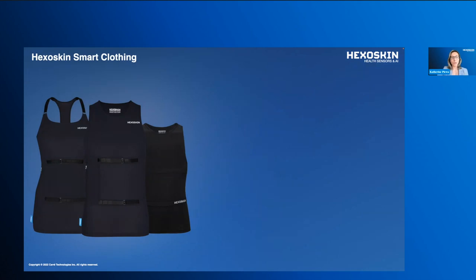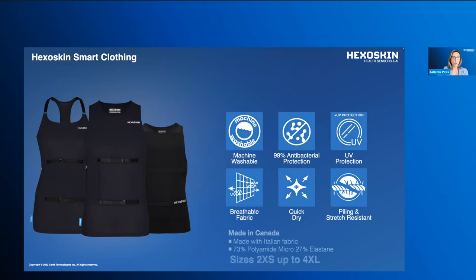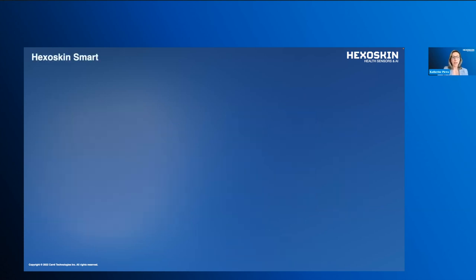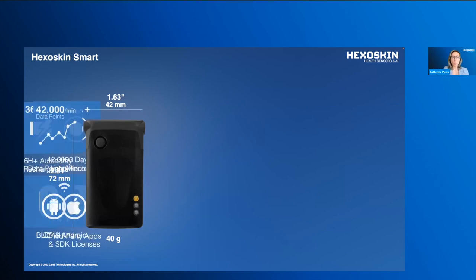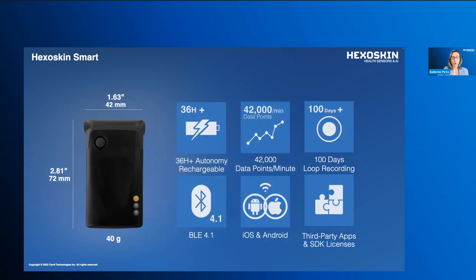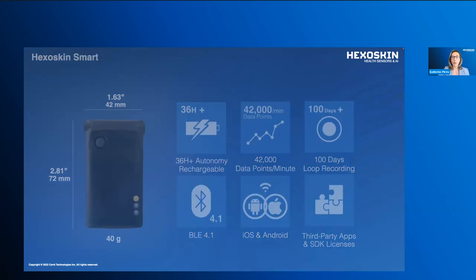Our shirts have been designed with features that make them reusable and durable without any compromise for comfort or portability. They have been used by over 10,000 users to date, and we have sizes that cover most populations. The Hexoskin smart device stores and records health data collected from the smart shirt — collecting up to 42,000 data points per minute, providing up to 36 hours of continuous data recording, and storing up to 100 days of raw data storage directly on the device. This allows our clients to build the data sets they need for AI model development.